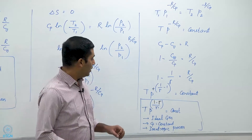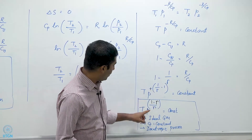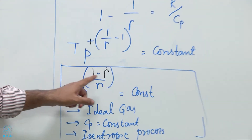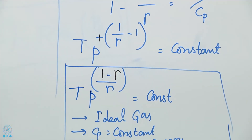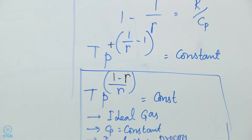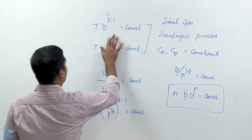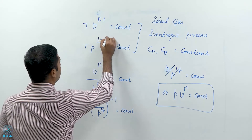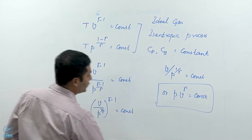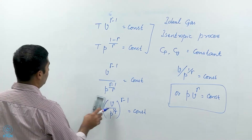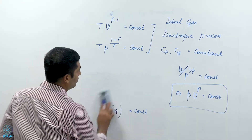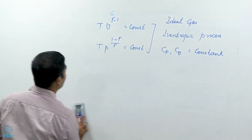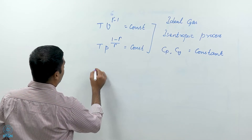There has been a small sign correction: the exponent should be T·P^((1-γ)/γ), not (γ-1)/γ as written earlier. When carried through, the intermediate step has exponent (1 minus gamma).